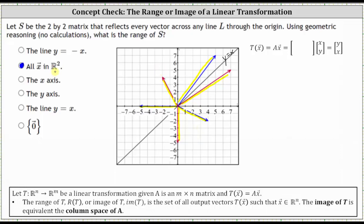The range of S, as well as the image of the transformation, is also equivalent to the column space of matrix A, where matrix A is the transformation matrix. Let's find the transformation matrix for a reflection across the line Y equals X.